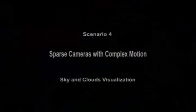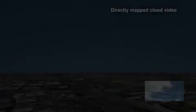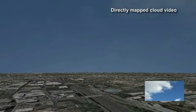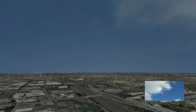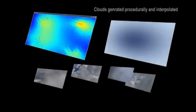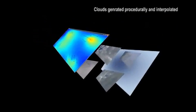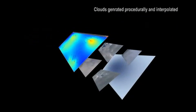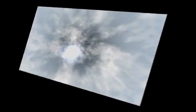Our final scenario is aimed at observing and modeling natural phenomena to add visual realism to our aerial maps. We take a few sparse videos of clouds moving under different conditions, then generate procedural models from these videos and project them back onto the aerial earth maps. We can also impart some control over the effects, as demonstrated here.